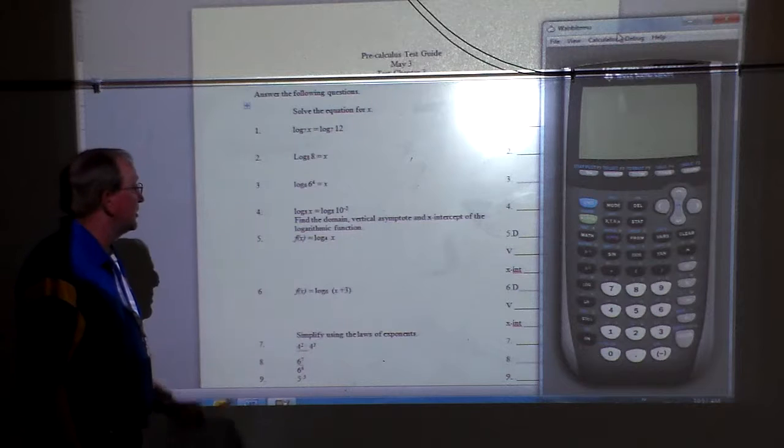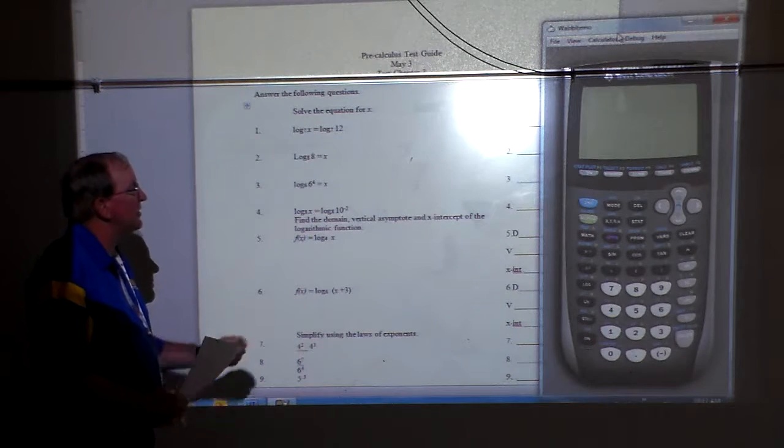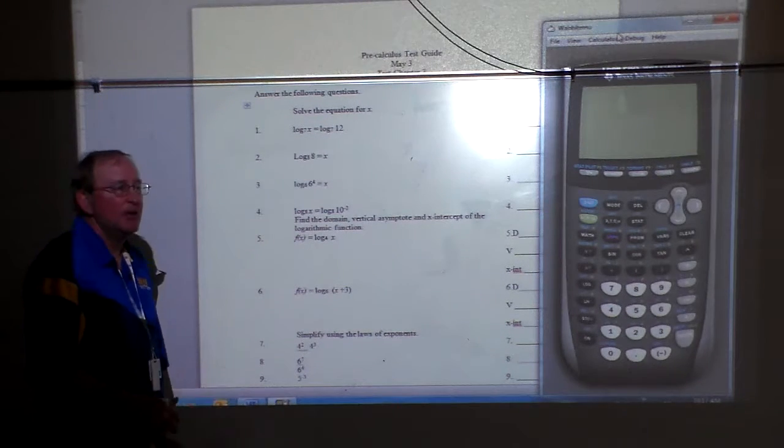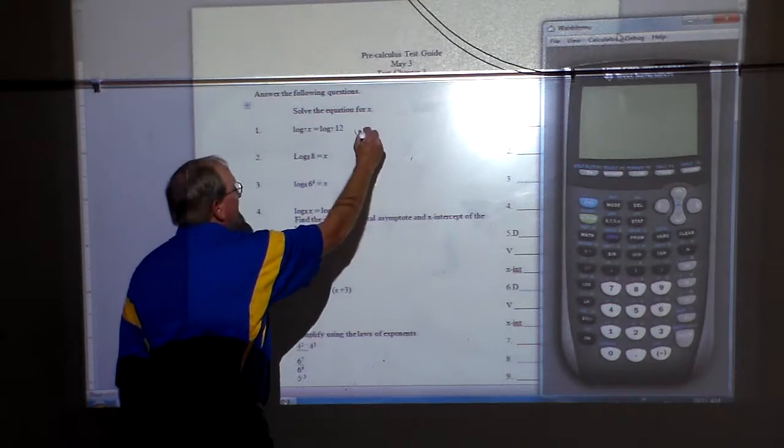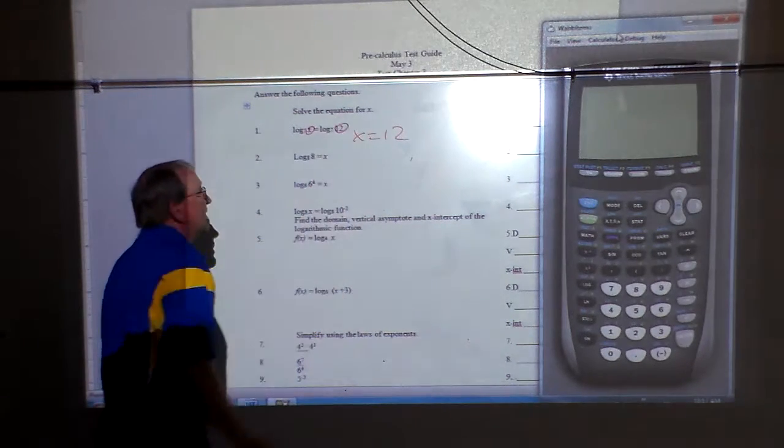We're going to look at these particular first four problems right here, and basically what we have is this. We have log base 7 of x equals log base 7 of 12. These are equal, so therefore x has to be 12. It's a property. It would take the same value to get the same answer.